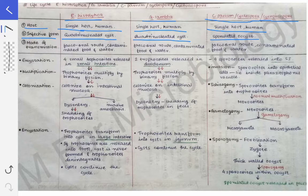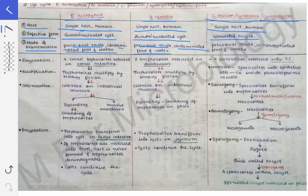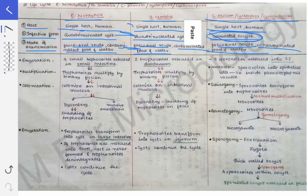The mode of transmission is simple for all of them — it is the feco-oral route, that is contaminated food and water. This is the same for Entamoeba histolytica, Giardia lamblia, and the coccidian parasites. The only difference is that in coccidians the infective form is the sporulated oocyst, while in histolytica and lamblia it is the quadrinucleated cyst. But the host and mode of transmission are the same in all of them.